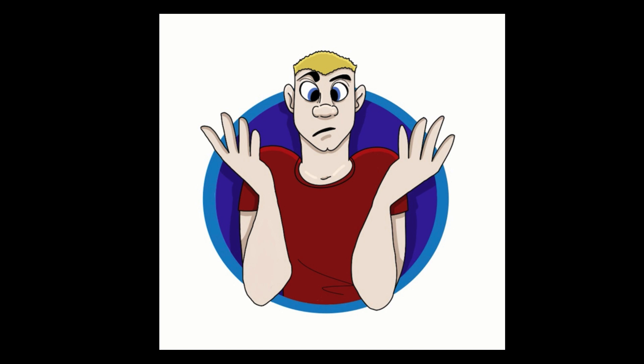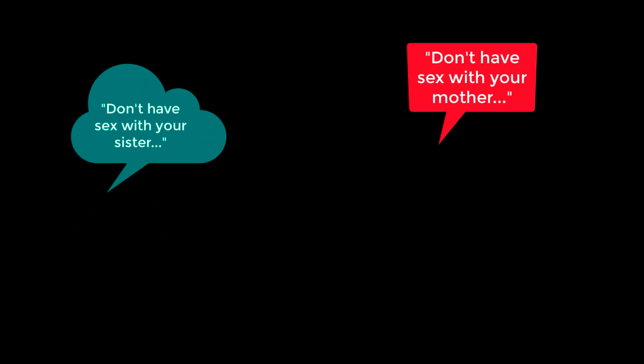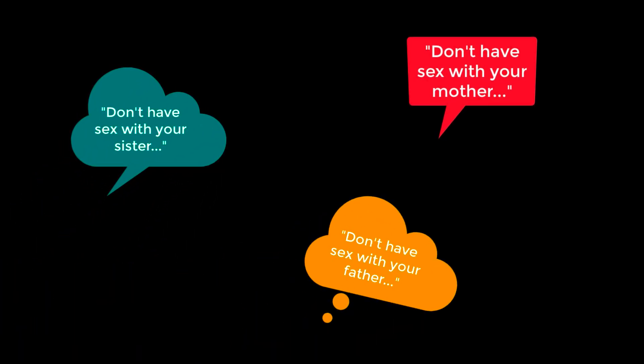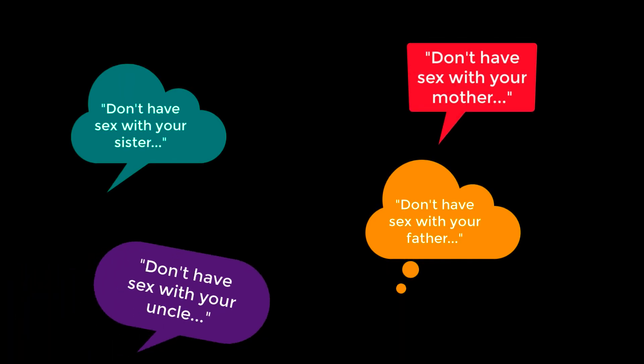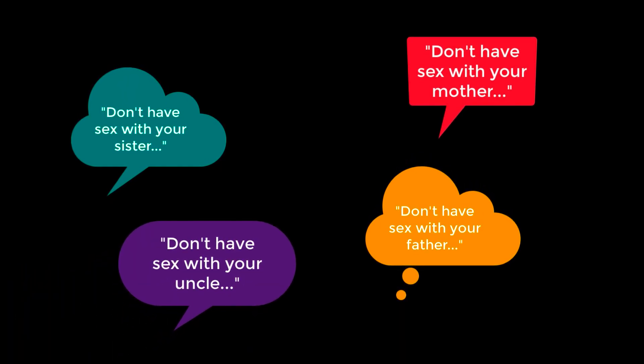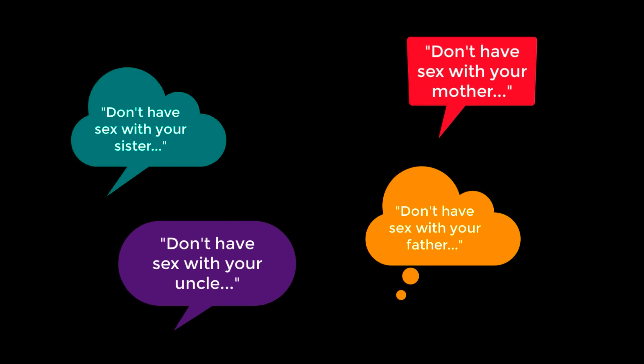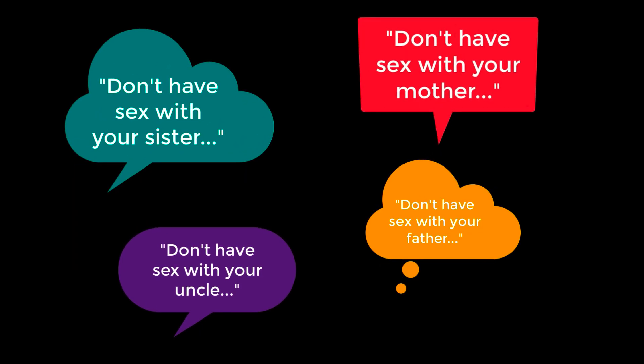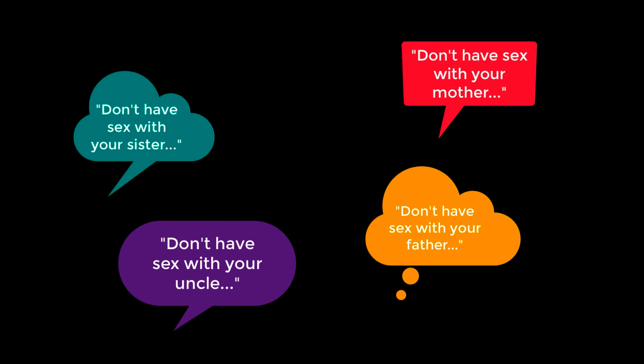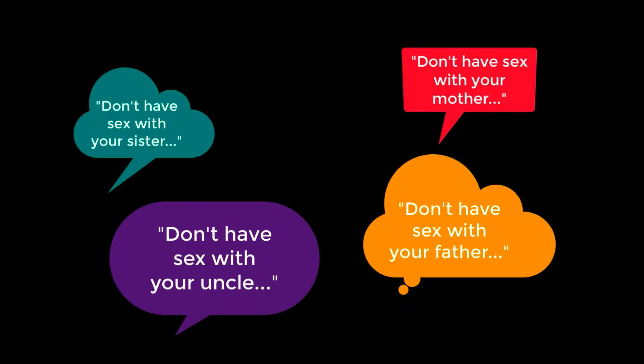In Leviticus 18, there was originally a set of laws against having sex with members of your family. So, don't have sex with your mother, don't have sex with your sister, and don't have sex with your father or your uncle. In other words, the laws were saying, you can have sex with women, but not these women, and you can have sex with men, just not these men.